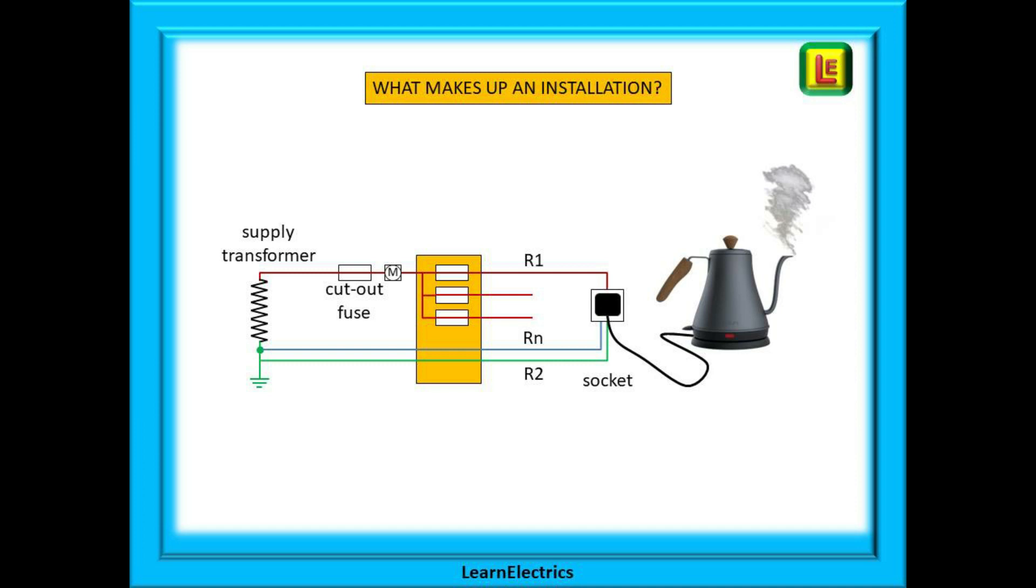Starting on the left we have our supply transformer perhaps half a mile down the road. This supplies electricity to our installation. The energized electricity enters the building through the cutout fuse, and today this is usually a hundred amps, and then it passes through the electricity meter so that they know how much to charge the customer. Now it passes through the circuit breaker in the consumer unit along the phase wire which we have labeled R1 here and into the socket.